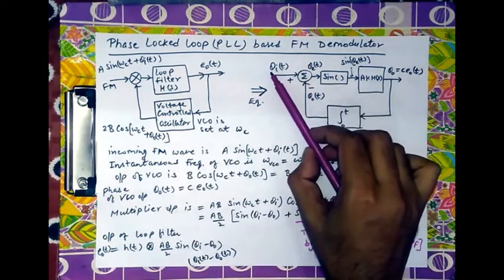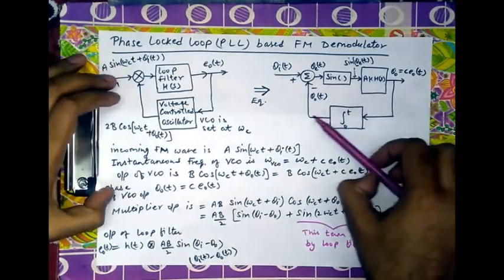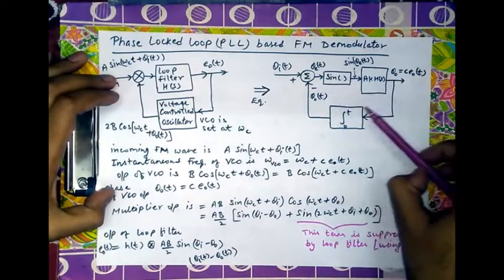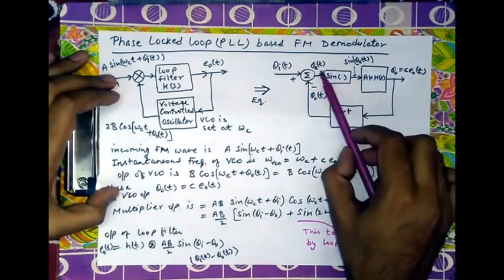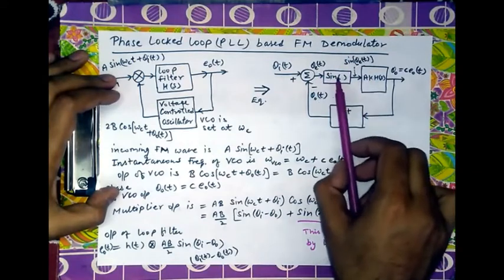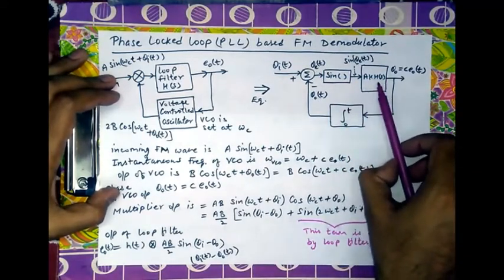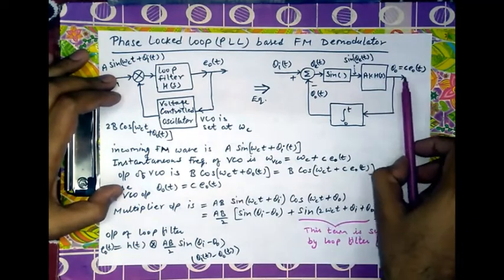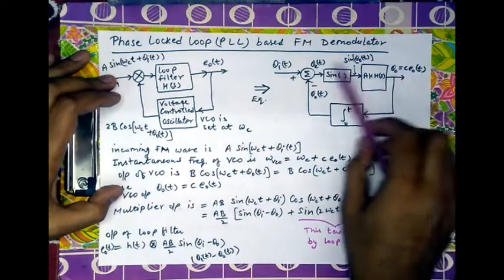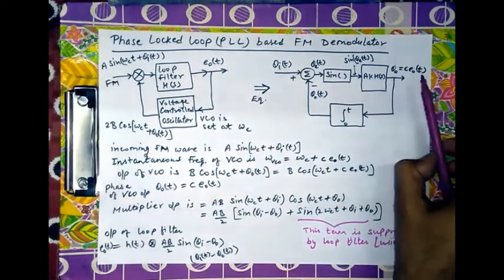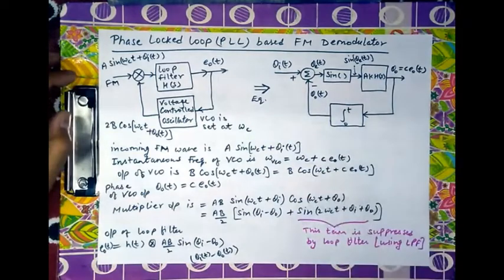There is an equivalent diagram in phasor form: the instantaneous phase of the FM wave is θ_i(t), the phase of the VCO output is θ_0(t), and the difference between both phases is θ_e(t), which is multiplied with a sine function, then passed to the loop filter H(s), and θ_0 is the output of the phase locked loop system.